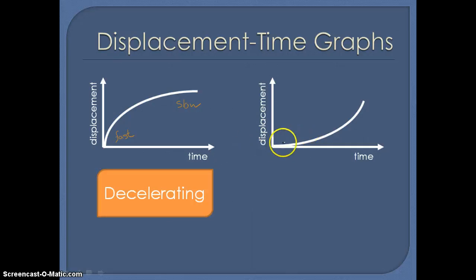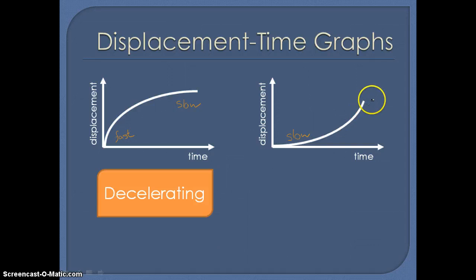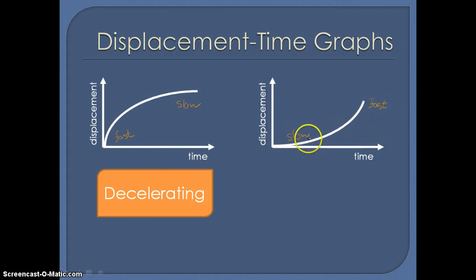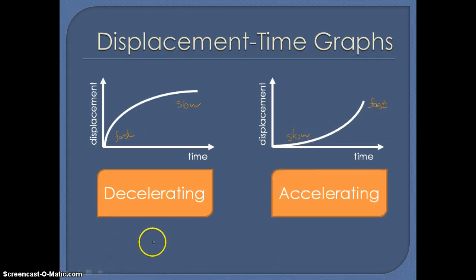Considering the second curve: it starts with a shallow curve, meaning we're starting off moving slowly, and it gradually becomes steeper as time passes, so we're moving faster at the end. Starting slowly and gradually moving more quickly means we're actually accelerating as time passes.